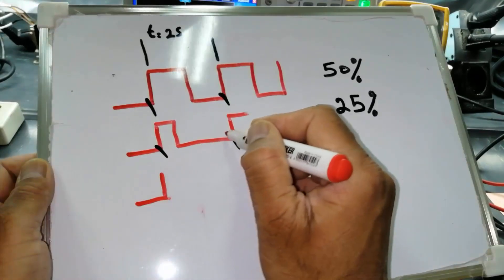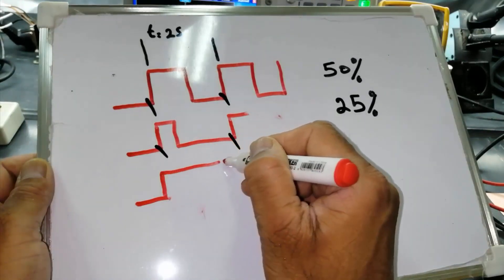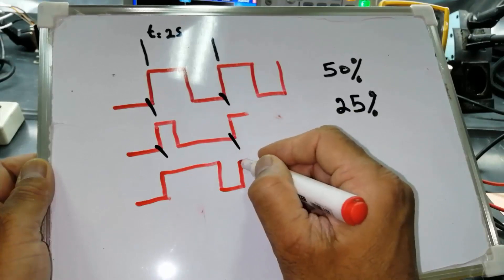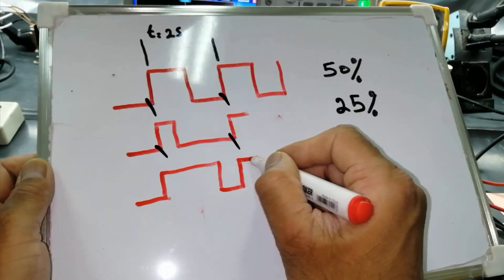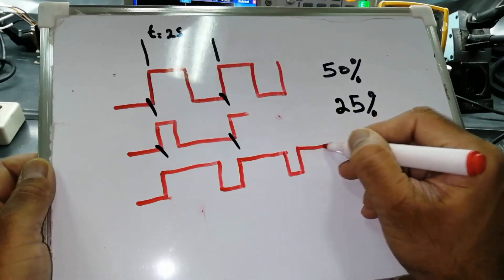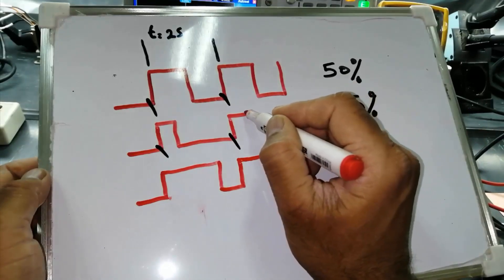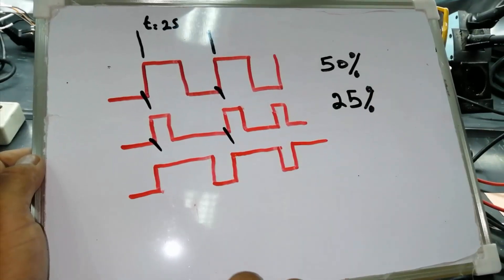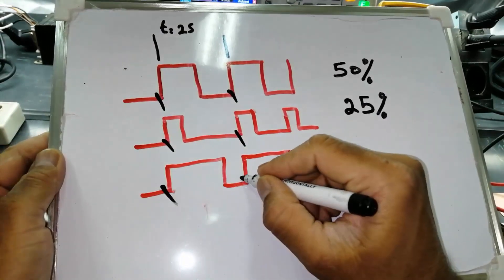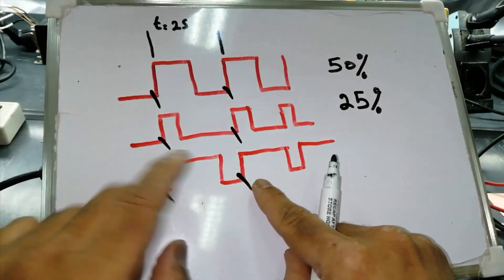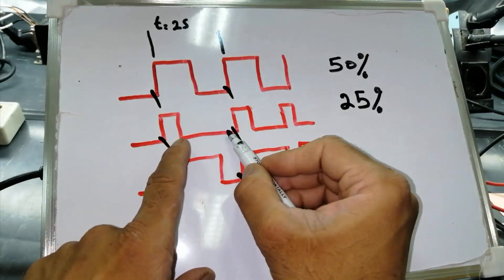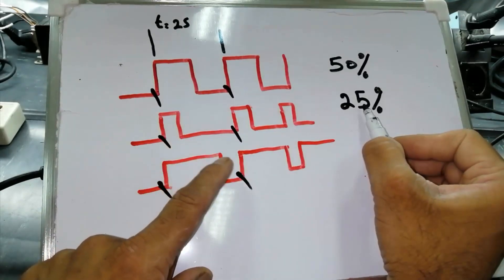In the next stage, starting from here it remains on until here, then goes off, then on — it remains on for this period, then off, then on. If we compare this cycle from one end to the other end, it is 25% on and 75% off. So we can say the duty cycle is 25%.